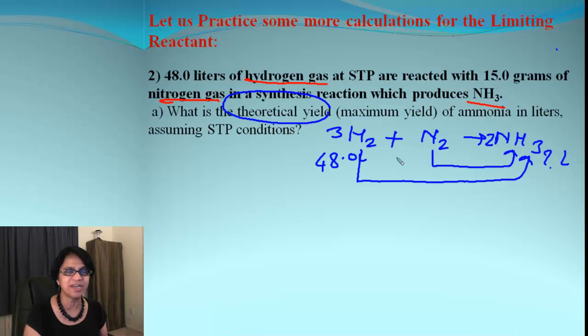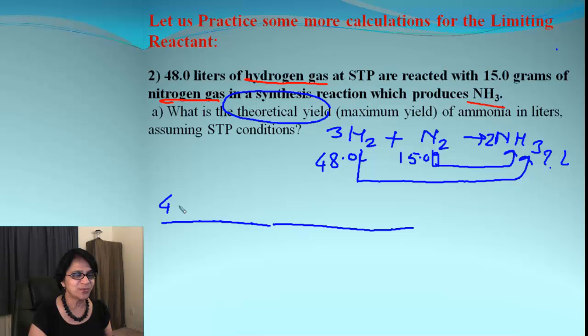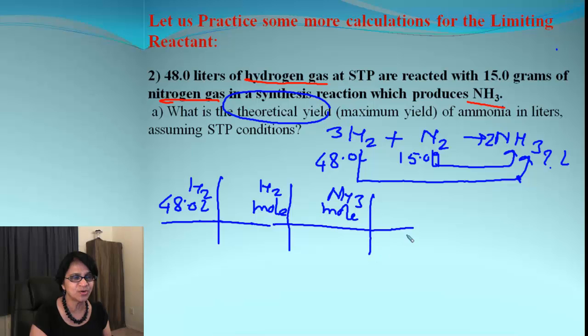How much do we have? We have 48.0 liters to begin with for hydrogen and we have 15 grams of nitrogen to begin with. Let's do the first calculation for hydrogen gas. So we have 48.0 liters of hydrogen. And from liters we go to moles. From moles we go to moles of ammonia. So let's cancel those units out.